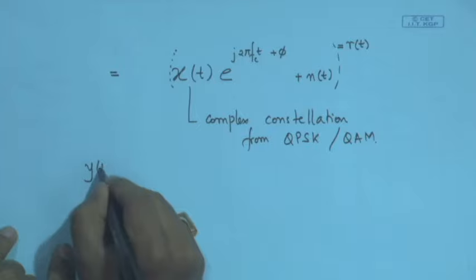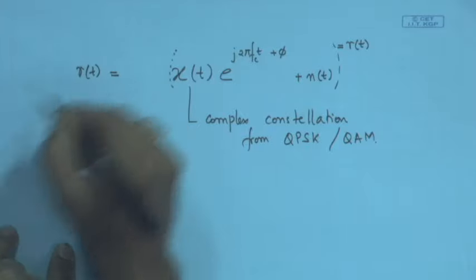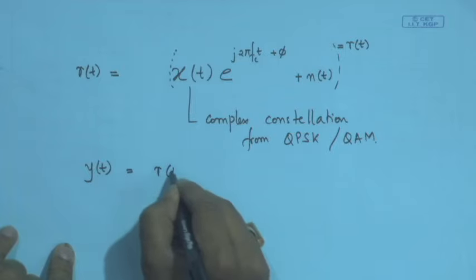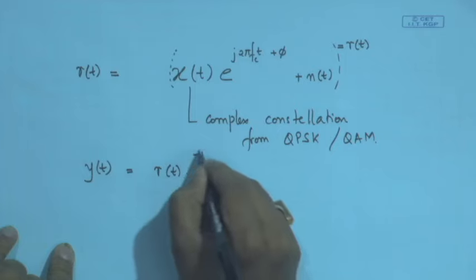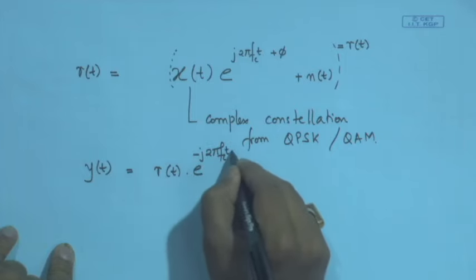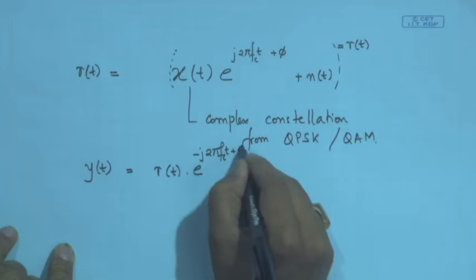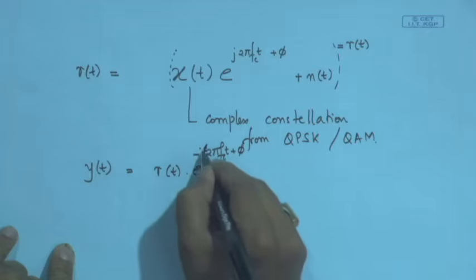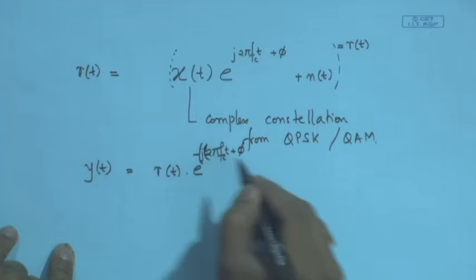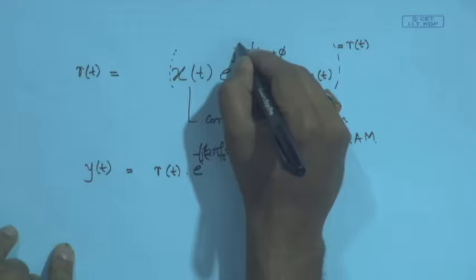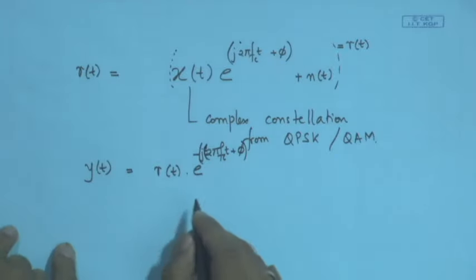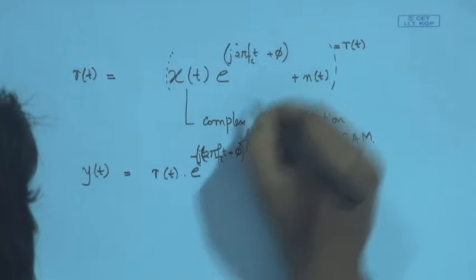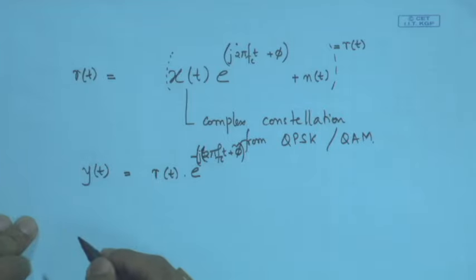When we deconstruct this signal at the receiver, y(t) = r(t) multiplied by e^{-j2πf_c t + φ}. Here, although we have said the phase φ is the same at both ends, technically we should have φ-tilde and f_c-tilde because during transmission there could be mobility, modifying f_c to f_c-tilde due to the Doppler effect.